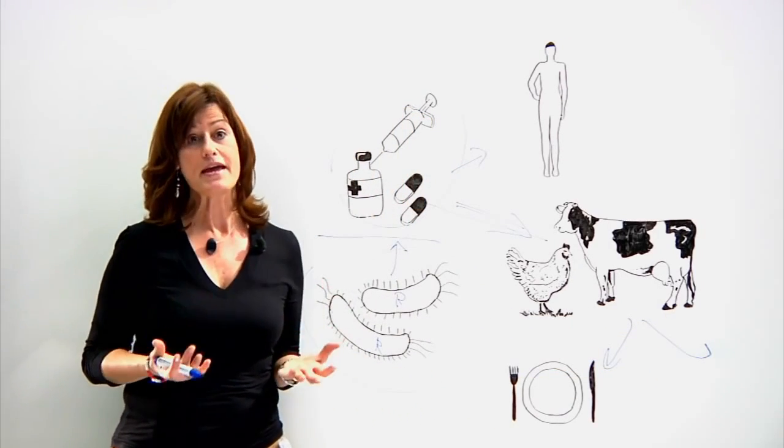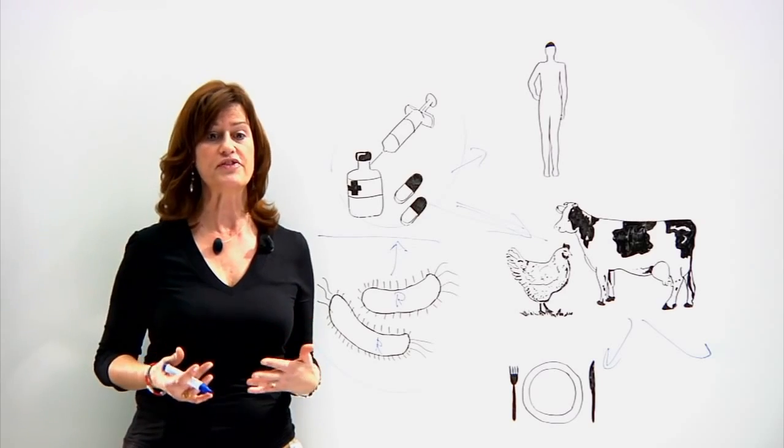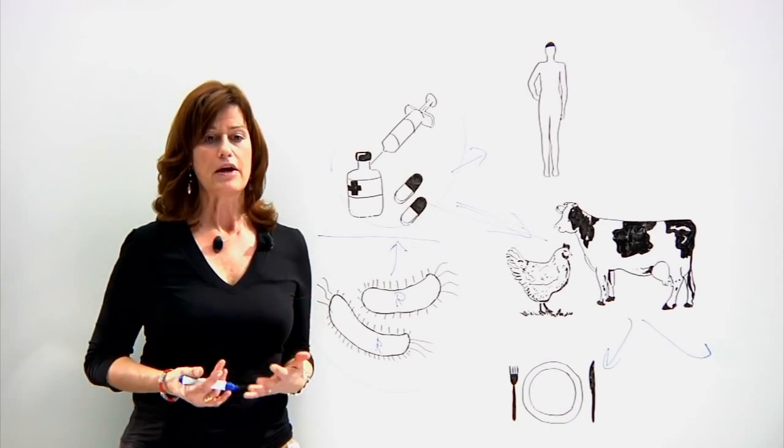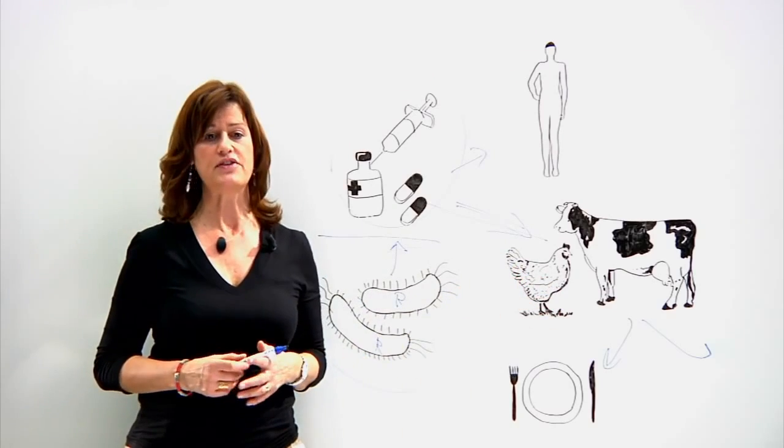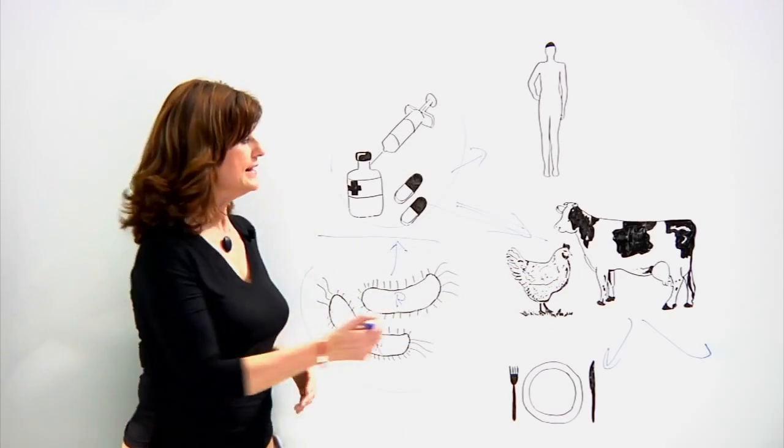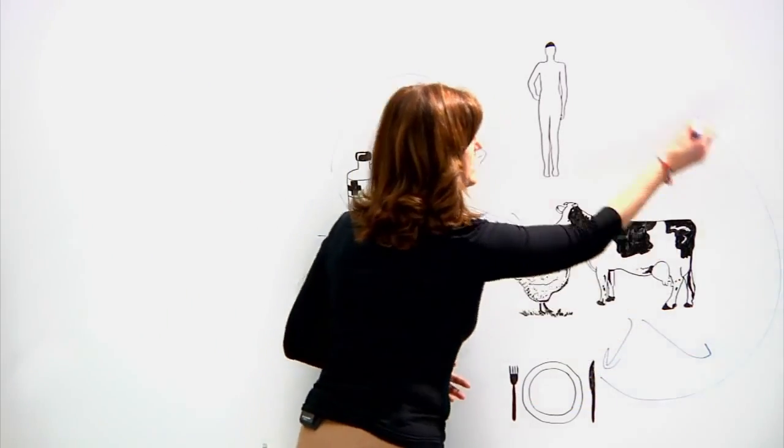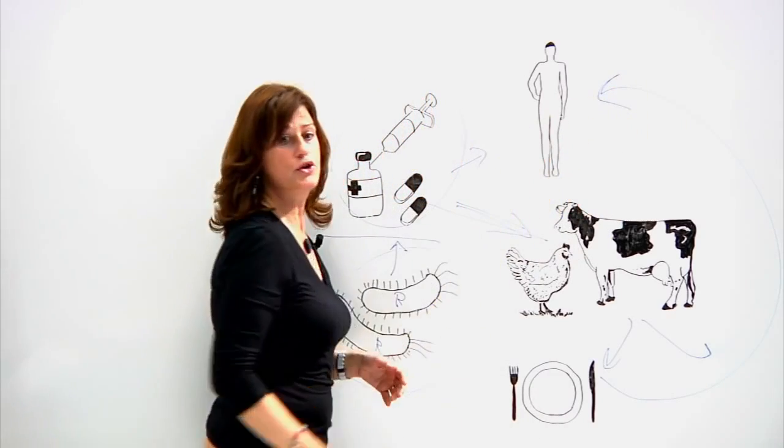Food can be a vehicle in transmitting the resistant bacteria because zoonotic bacteria live in their gastrointestinal tract. So it can also go from the animals through food back to humans.